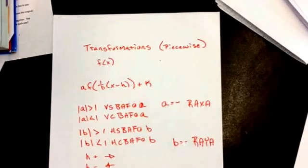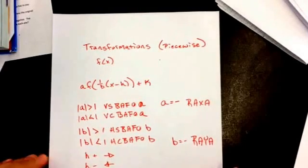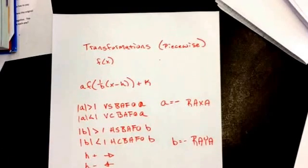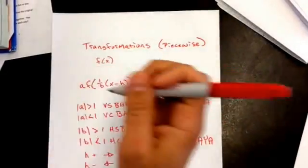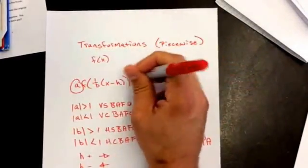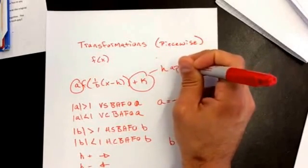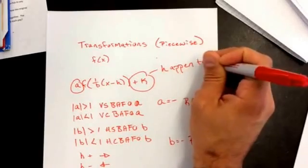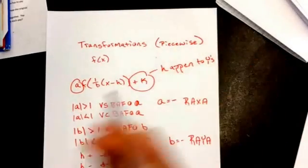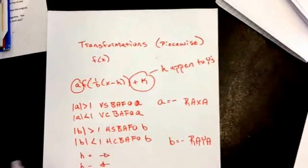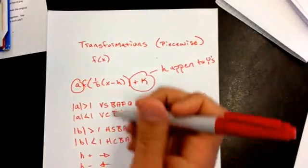Okay, so that's everything that's happening here. So we're looking at all of these different portions and what they do to a piecewise function. So what it's doing is, essentially, the things that are happening vertically, which are right here and right here, happen to the y's, happen to the rules. And then, the things that are happening horizontally happen to the x's.